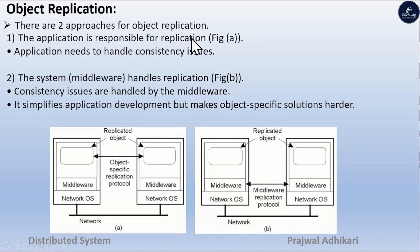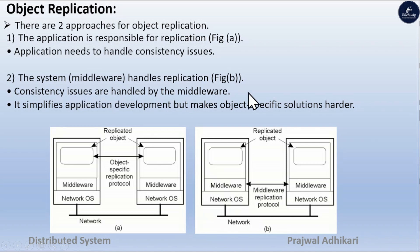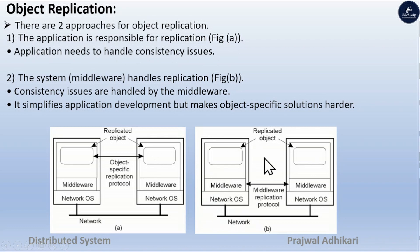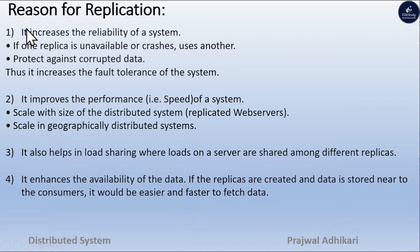There are two approaches for object replication: the application is responsible for replication, and the system or middleware handles the replication. In the first approach, the application needs to handle the consistency issues. In the second approach, consistency issues are handled by the middleware, which simplifies application development but makes the solution object-specific. There are two diagrams: figure A and figure B illustrating these approaches.